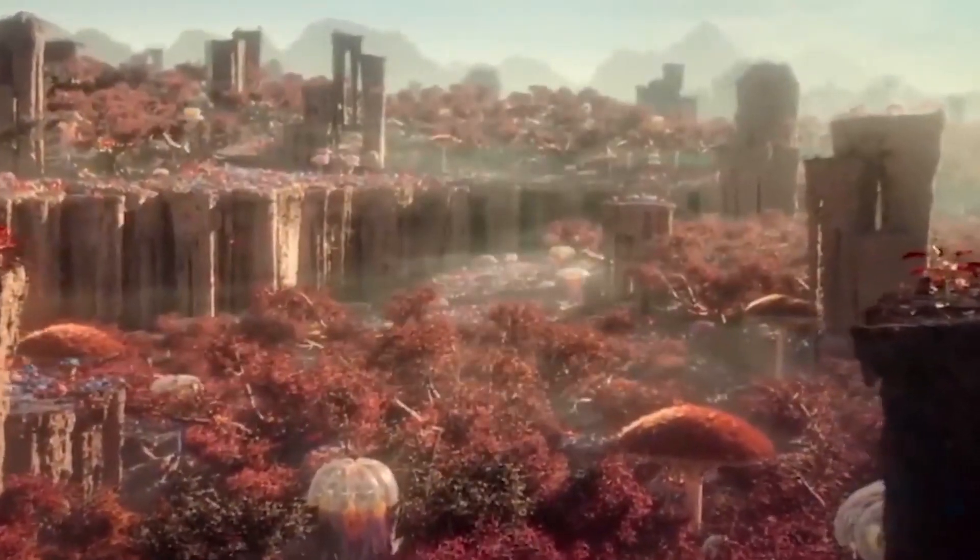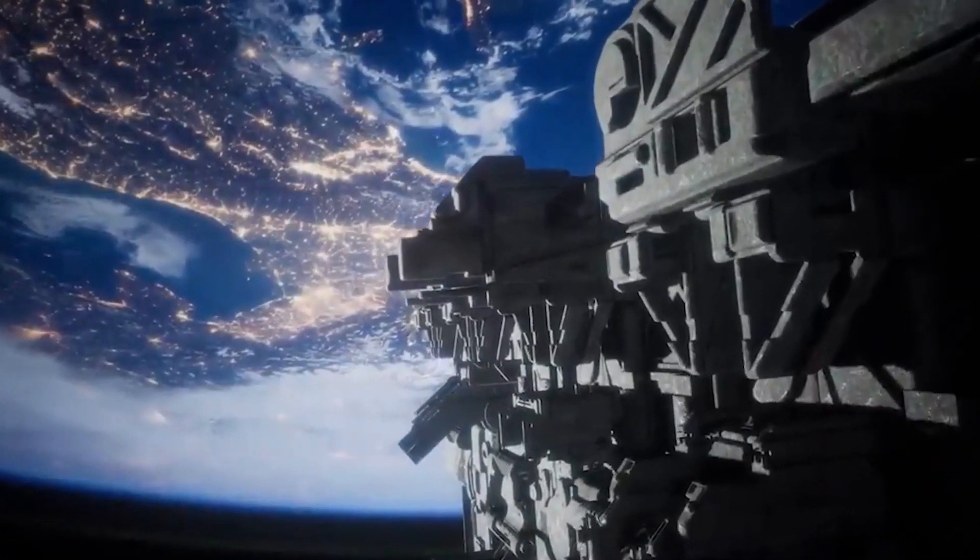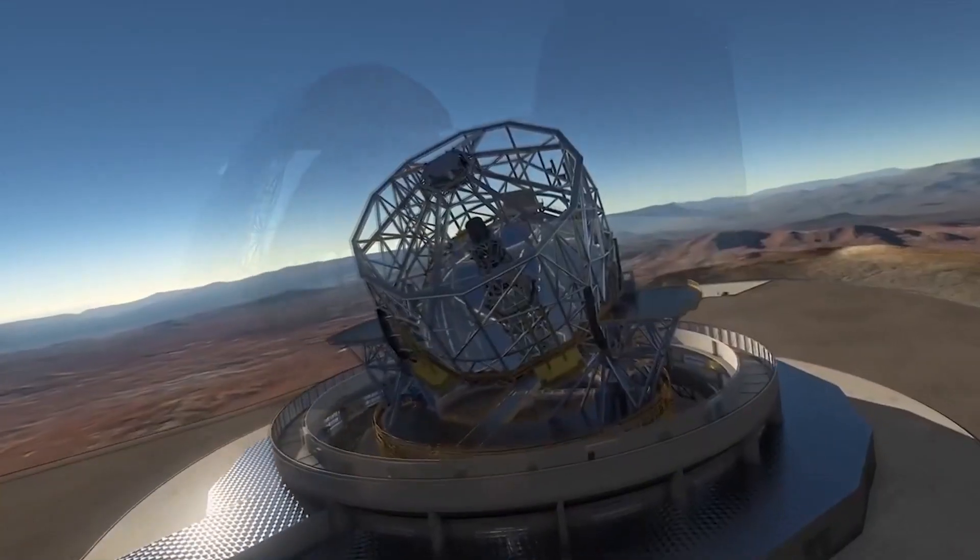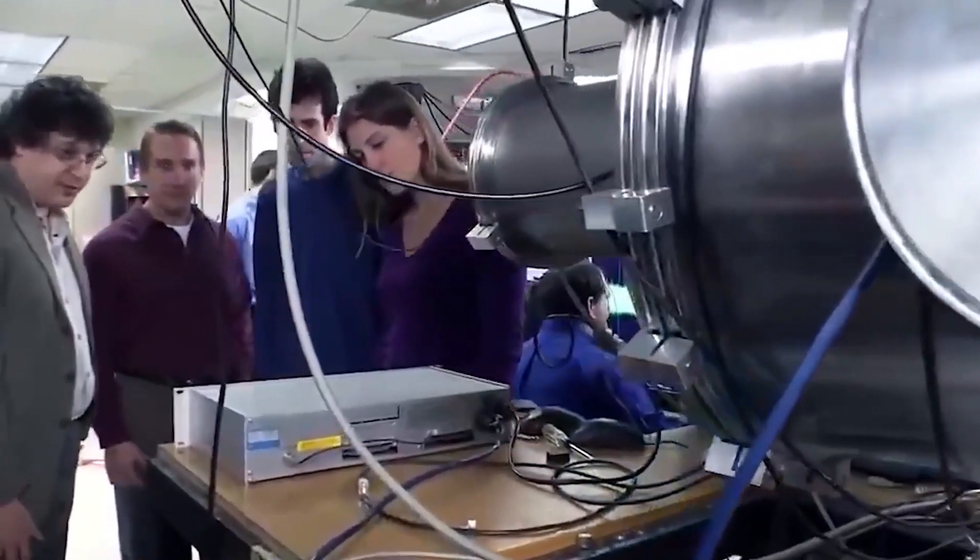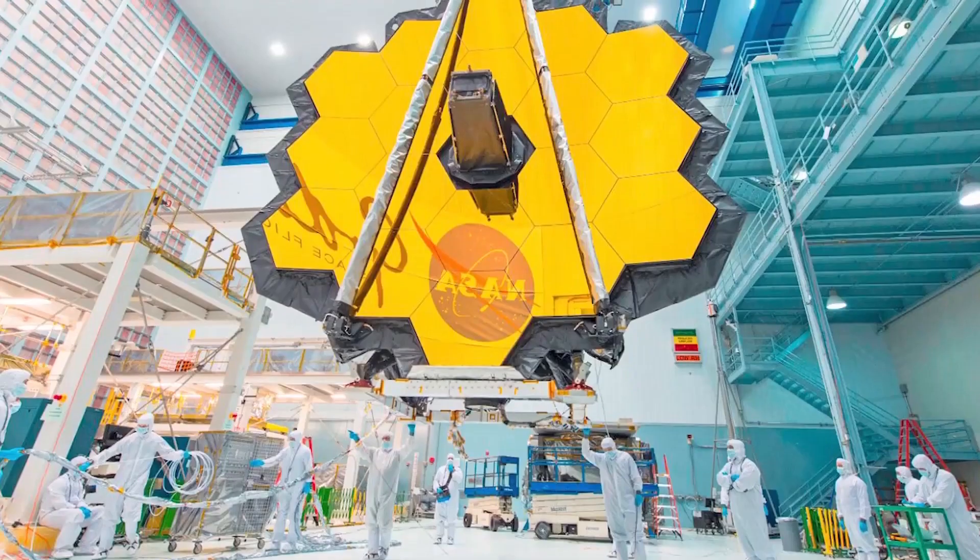Planets must be 10 times closer to their star to be in the habitable zone, else they are more prone to damage from solar storms and flares. For us on Earth, our atmosphere absorbs these solar X-rays that make the planet safer for its inhabitants.